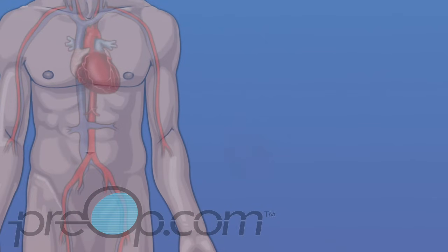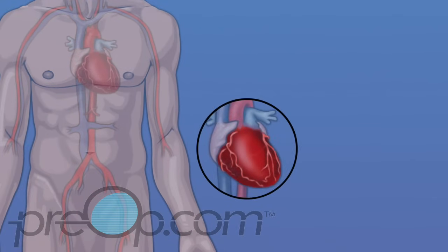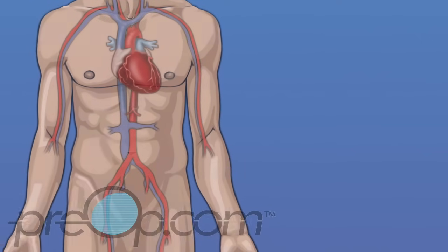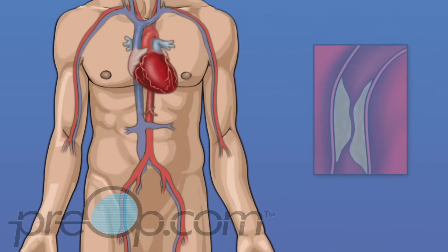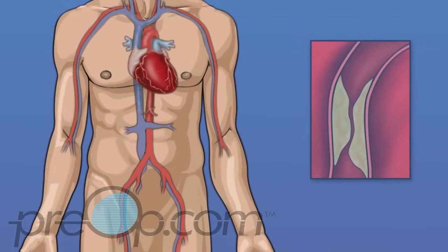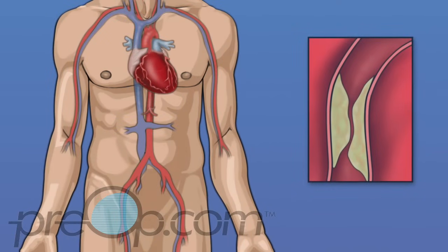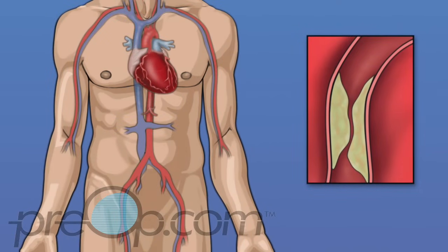The heart muscle is supplied with oxygen-rich blood by two coronary arteries — a right and a left coronary artery. These arteries can be blocked by plaque. This is called coronary artery disease, or heart disease.